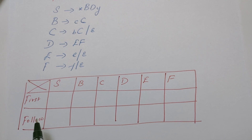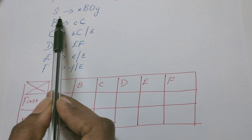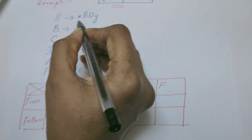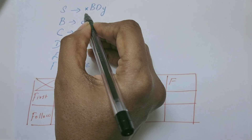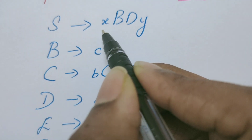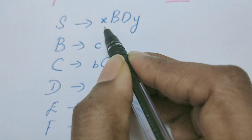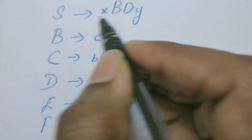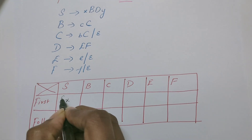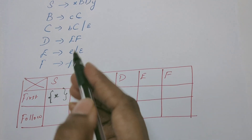Now let's start computing the FIRST and FOLLOW. Already in my previous videos I have given the rules for how to find FIRST and FOLLOW. Now let us find FIRST of S. In place of S, just check what we could replace — we could replace it by X B D Y, and the first symbol is a terminal, so directly we can add it. FIRST of S is X.